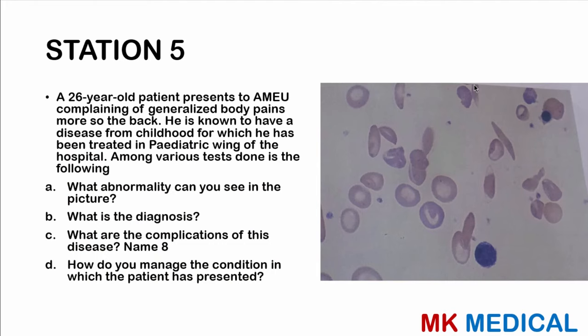Station 5. A 26-year-old patient presents with generalized body pains, more so the back. He is known to have a disease from childhood for which he has been treated in the pediatric wing of the hospital. Among various tests is the following picture. What abnormality can you see? What is the diagnosis? What are the complications? Name eight. How do you manage the condition? I'll give you two seconds to think through this — it should sound familiar.